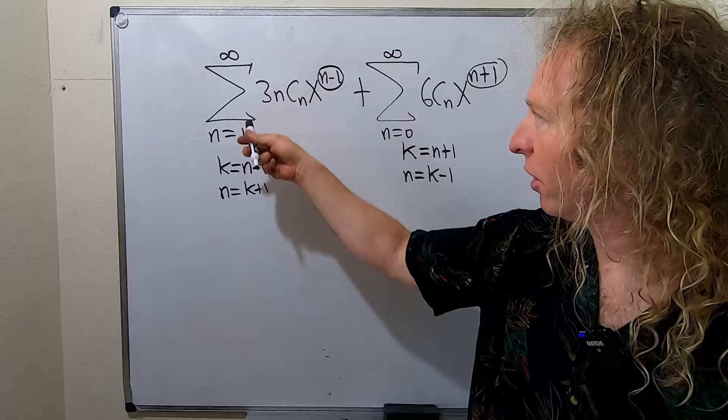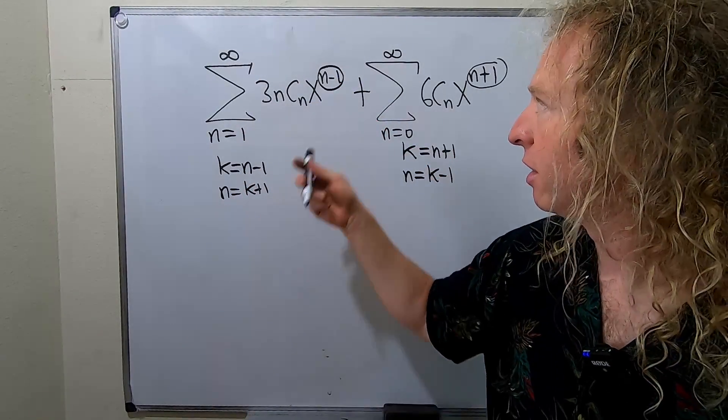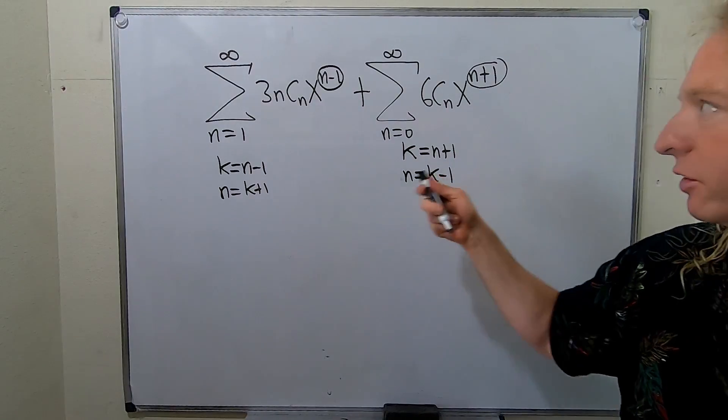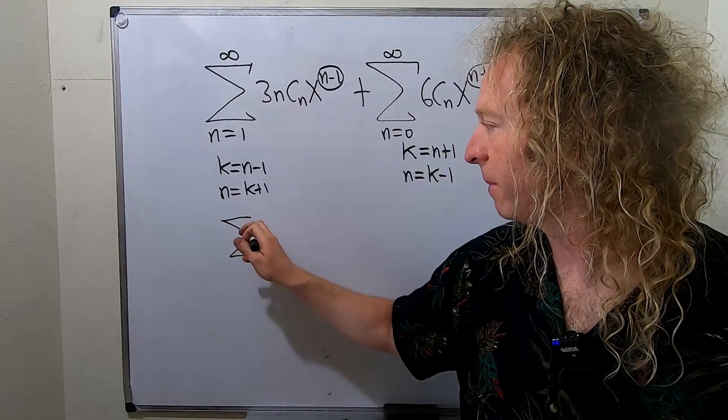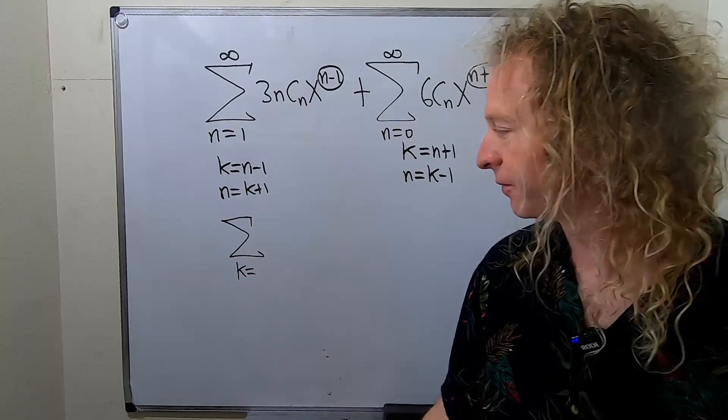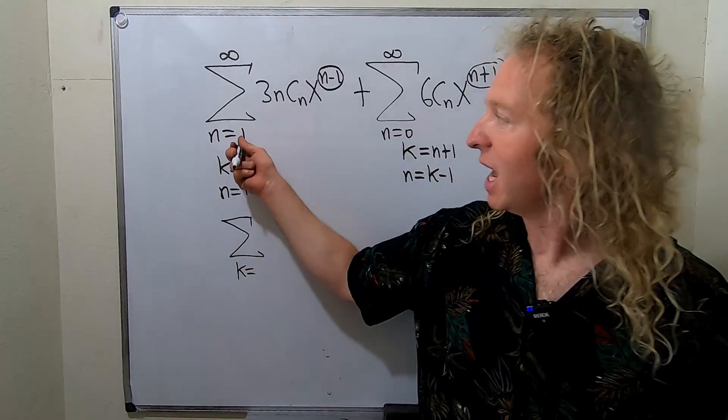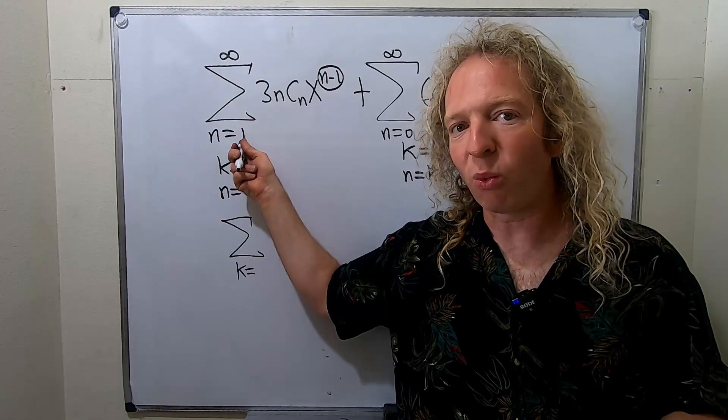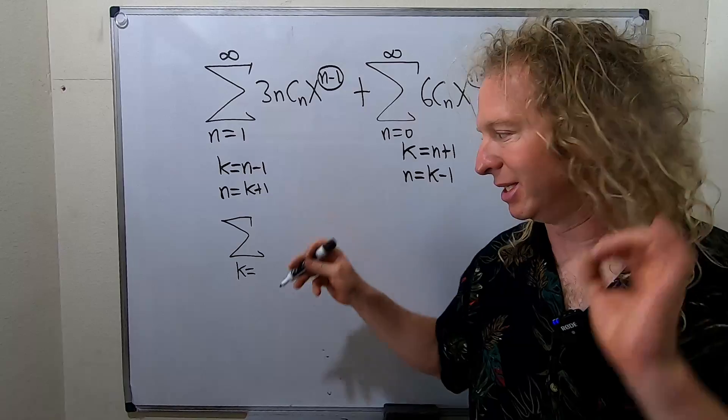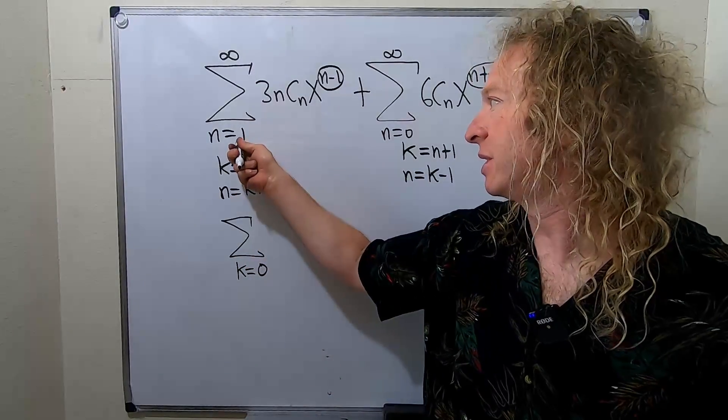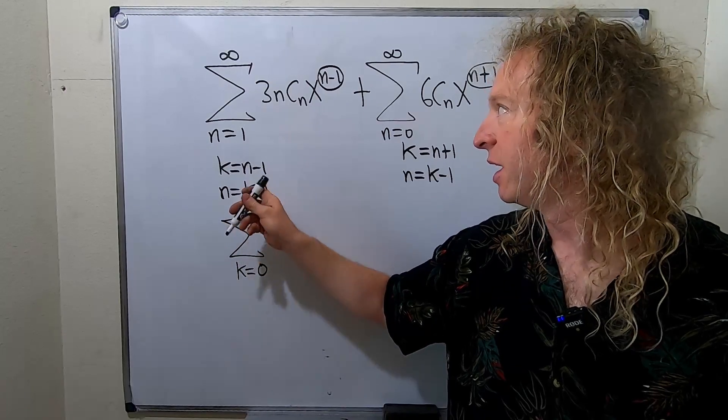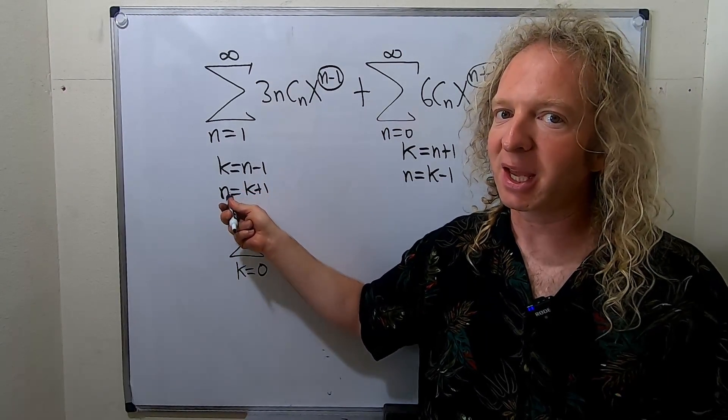Now we're going to replace the sum with whatever we end up with. So again you call it k, solve for n. Call it k, solve for n. Let's rewrite our sum. So we have the sum. Now everything is k. So it's k equals... Let's see where we start. So if n is 1 you can take the 1 and plug it in here. So k is 1 minus 1 which is 0.